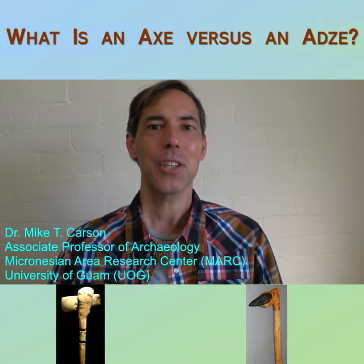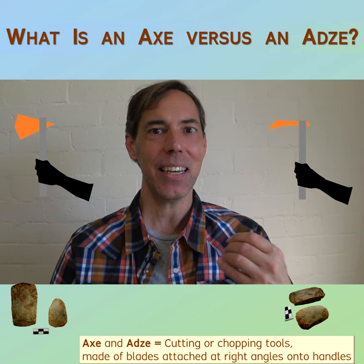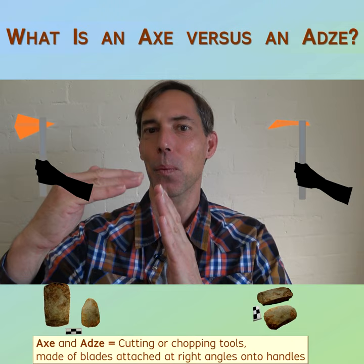What is an axe versus an adze? Here is a short answer. An axe and an adze are two forms of a cutting or chopping tool made of a blade attached at a right angle with a handle.